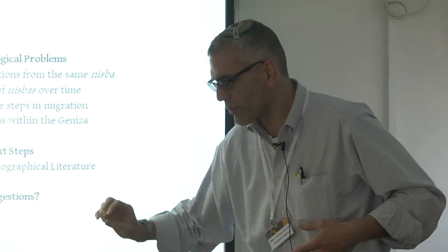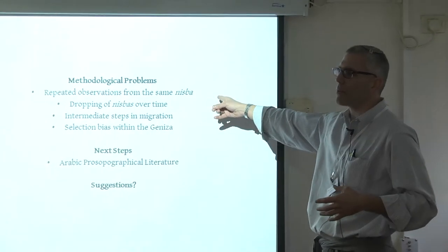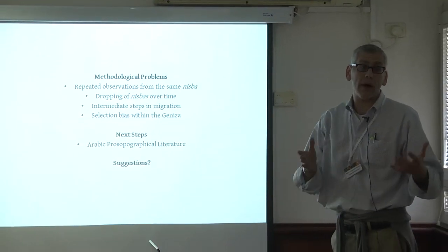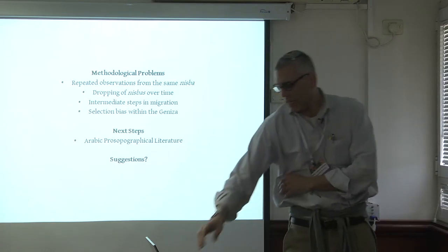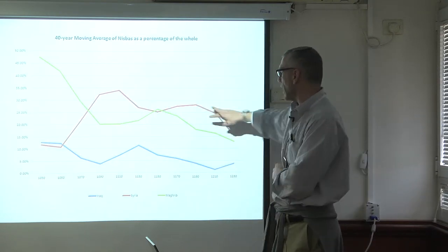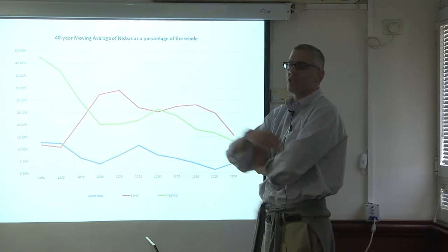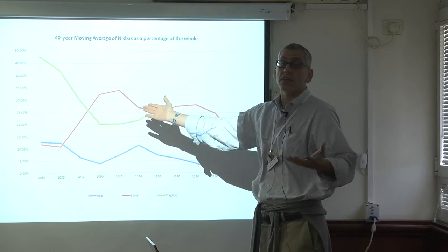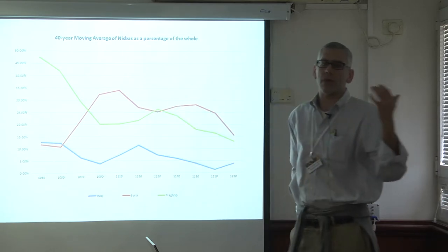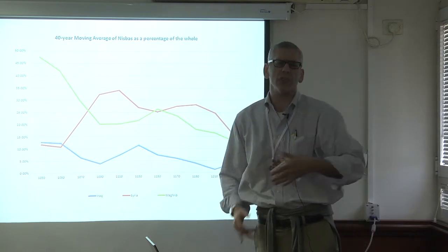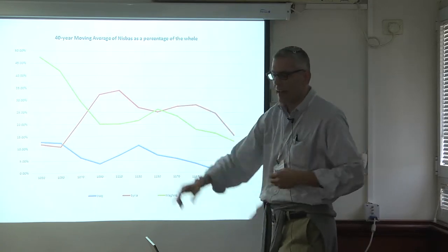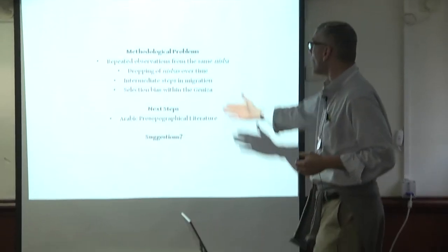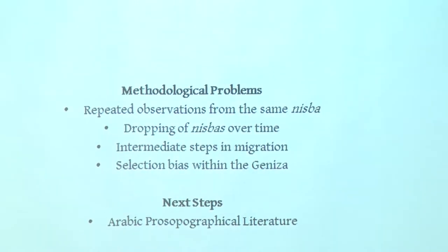Let's talk about the methodological problems. Number one: repeated observations from the same individual. I tried to clean the data — if the same name, patronymic, and Nisbah appears in two documents from the same year it's clearly the same character, though sometimes a character appears with one Nisbah and sometimes without, and names can be spelled differently, such as Hillel with or without an aleph. A second problem is the dropping of Nisbahs over time — how do you know if someone dropped their Nisbah or changed it?